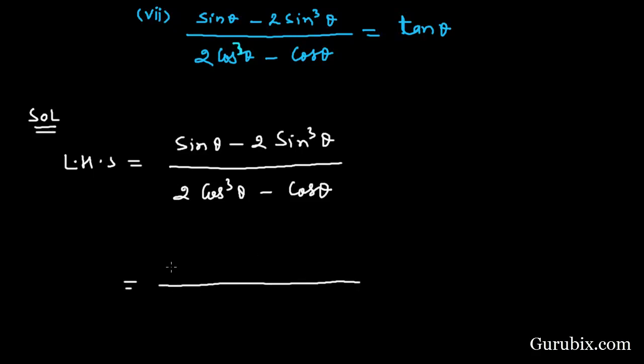Now we shall take sin θ common in the numerator. Then we have sin θ times (1 - 2sin²θ).